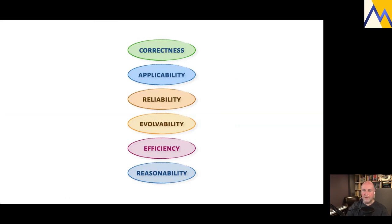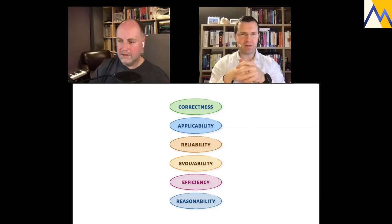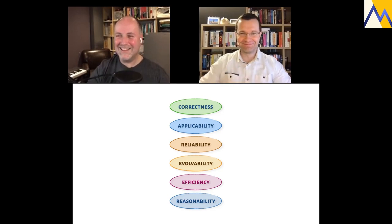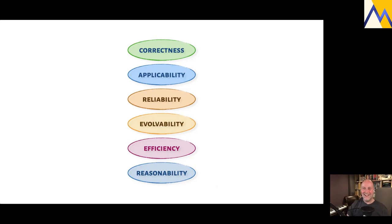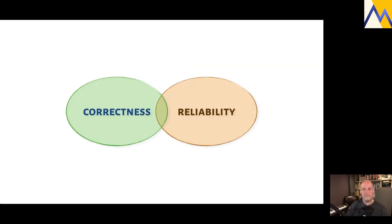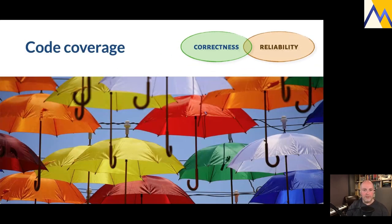Coming back to our stack - the next pairing is correctness with reliability. With correctness we're talking more about being bug-free, no logic errors. Reliability is about handling unexpected cases - we typically associate this with error handling. Putting those two together is mostly about coverage. Line or statement coverage is the domain of most code coverage tools. If you're doing TDD, you should end up with 100% code coverage automatically, but that can give you a false sense of security.